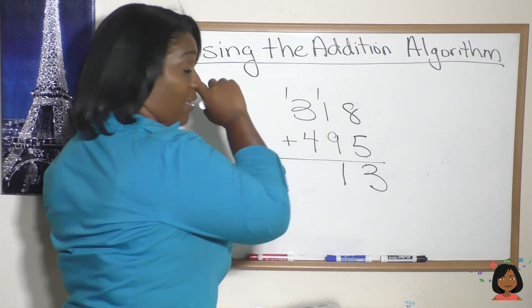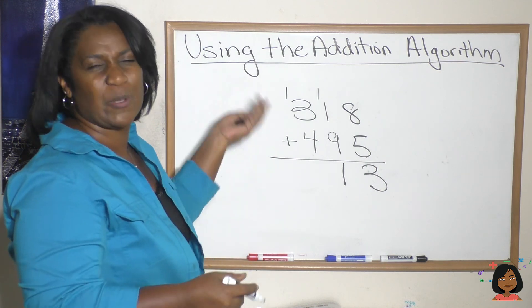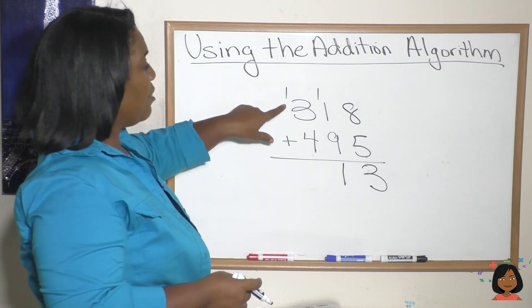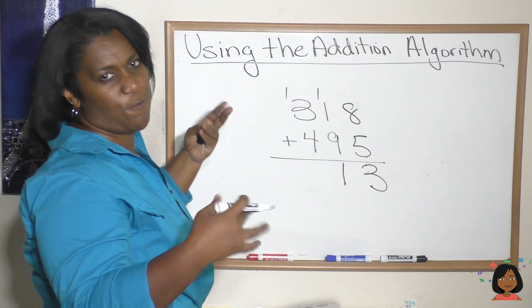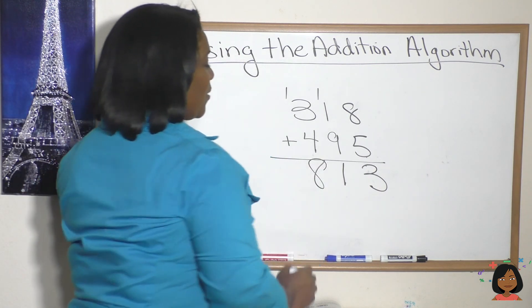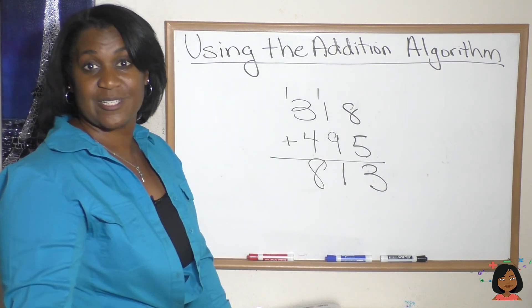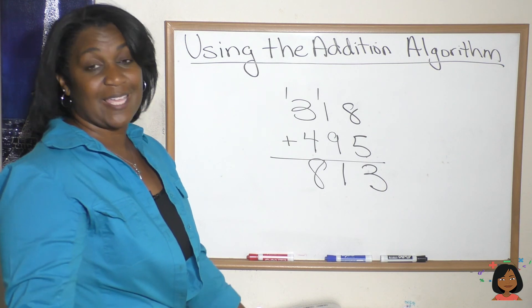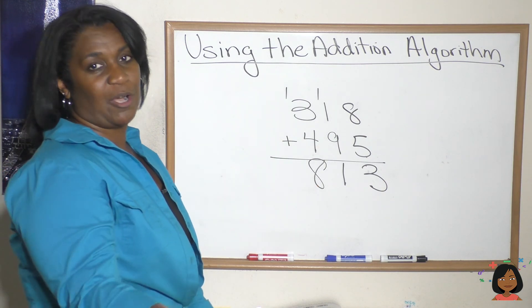1 + 3 is 4, 4 + 4 is 8. So our answer is 813. Okay, if you know how to do that, you are golden. Definitely try the practice problems. Make sure you can do them.